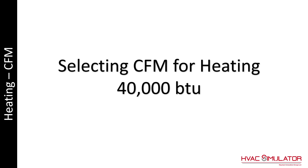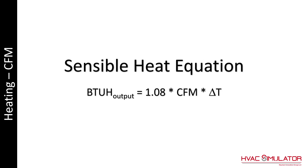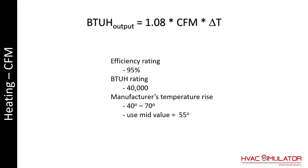Selecting CFM for heating. In this example, a 40,000 BTU furnace will be used. Begin by using the sensible heat equation. The sensible heat is much larger than the latent heat, so this formula is a good starting point. BTU output is equal to 1.08 times CFM times delta T. Items needed from the data nameplate of the furnace include the efficiency rating, the BTU rating, and the manufacturer's temperature rise. Always use the mid value — the mid value between 40 and 70 degrees is 55.